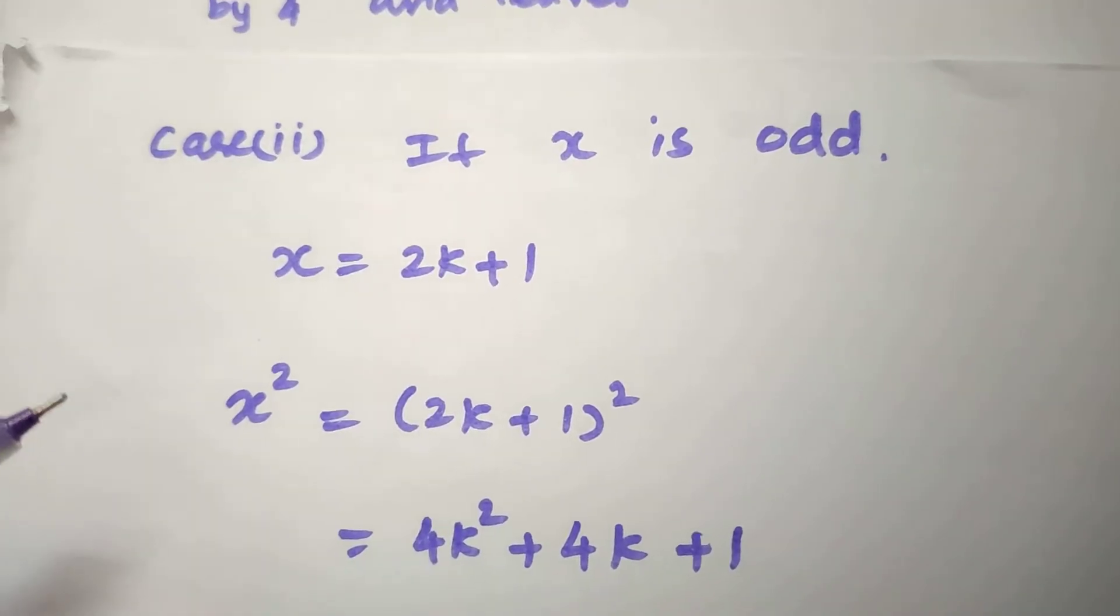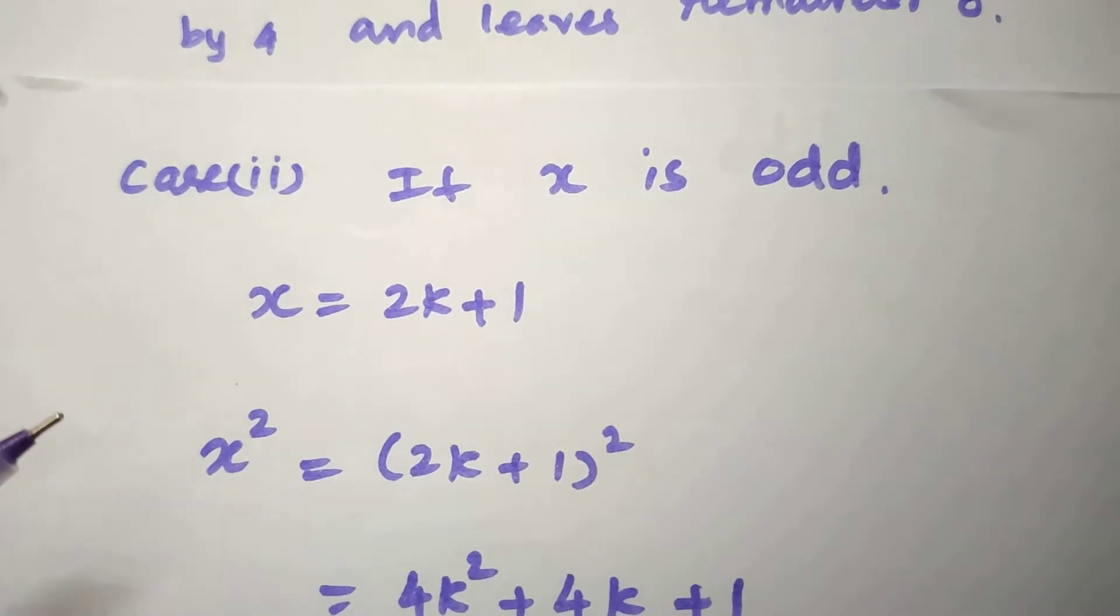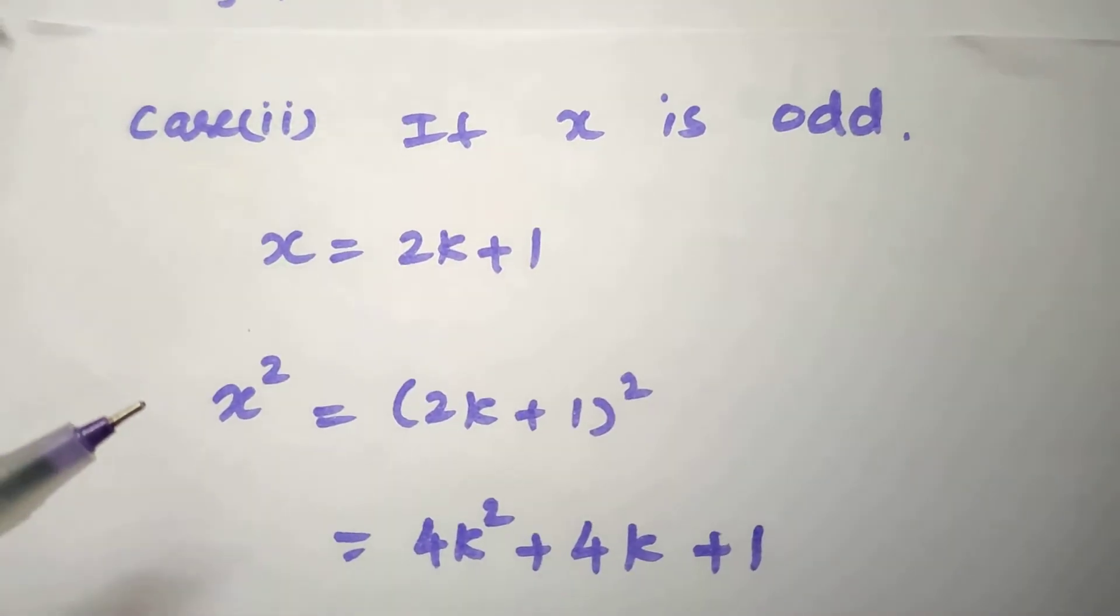Case 2: If x is an odd number, then x = 2k+1 in general form.